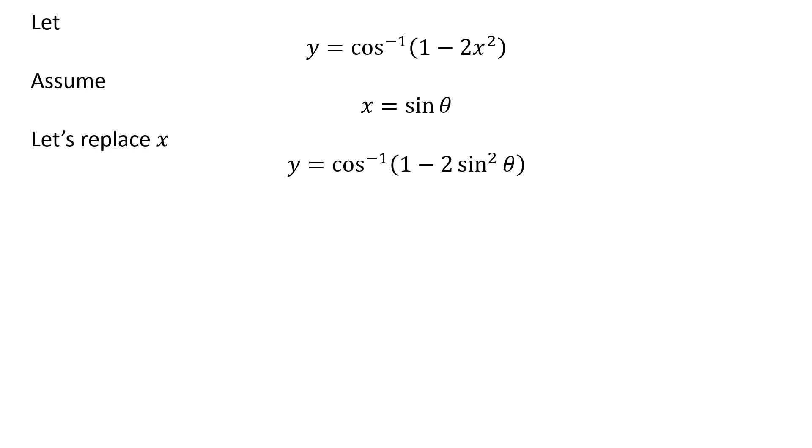Replacing x by our assumed value in y gives us y is equal to inverse of cosine of 1 minus 2 times square of sine of theta. We know 1 minus 2 times square of sine of theta is equal to cosine of 2 times theta.